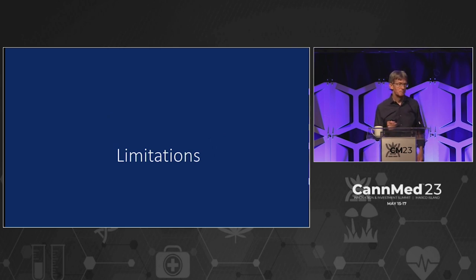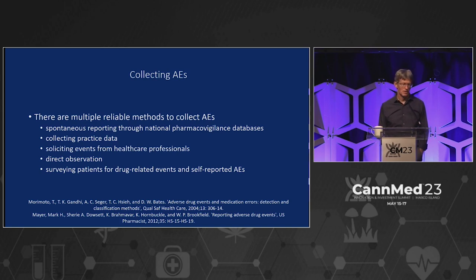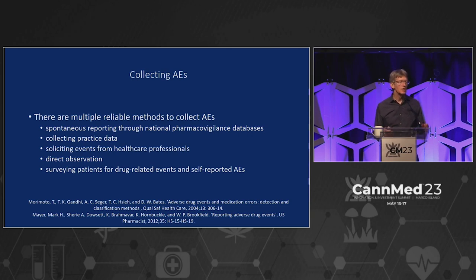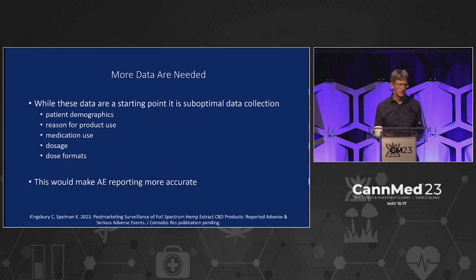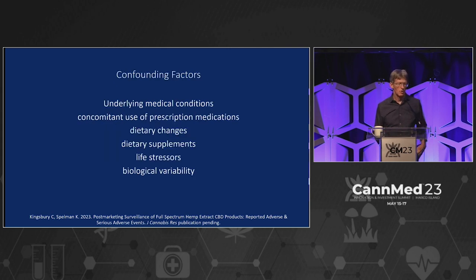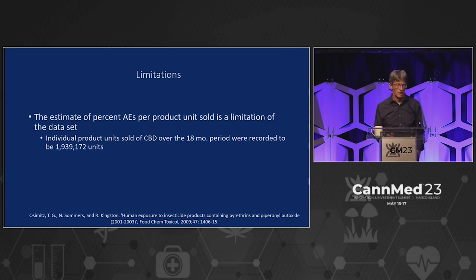Let's talk about limitations of this data. There are multiple methods to collect AEs — spontaneous reporting through national pharmacovigilance databases, collecting practice data, soliciting events from healthcare professionals, direct observation — they all have their weaknesses and strengths. Surveying patients has some weaknesses, but this provides a starting point. Confounding factors include underlying medical conditions, prescription medications, dietary changes, biological variability, and life stressors — they're all considerable. And correlating units sold to actual people is very, very difficult.